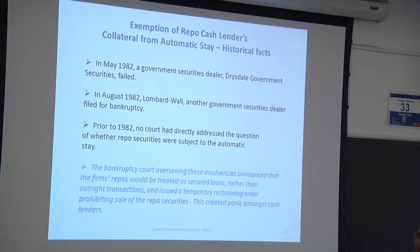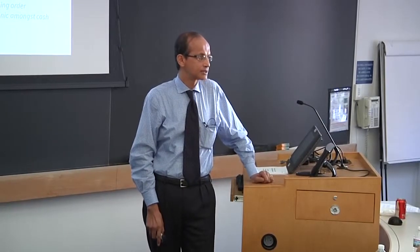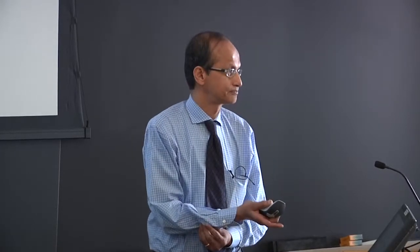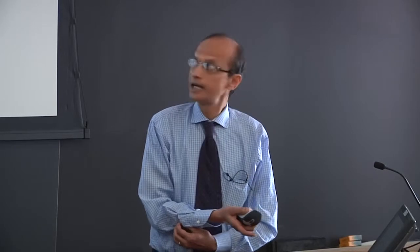I want to give a bit of historical background about exemption from automatic stay and how it came about. We need to go back to the 1980s. In May 1982, Drysdale Government Securities failed, followed in August 1982 by Lombard-Wall. At the time, the Chairman of the Federal Reserve was Paul Volcker. He feared that these failures of primary dealer and repo dealer firms could be quite problematic for the central bank, because the central bank is a big player in the repo market — that is the mechanism through which it injects or drains liquidity into the capital markets.